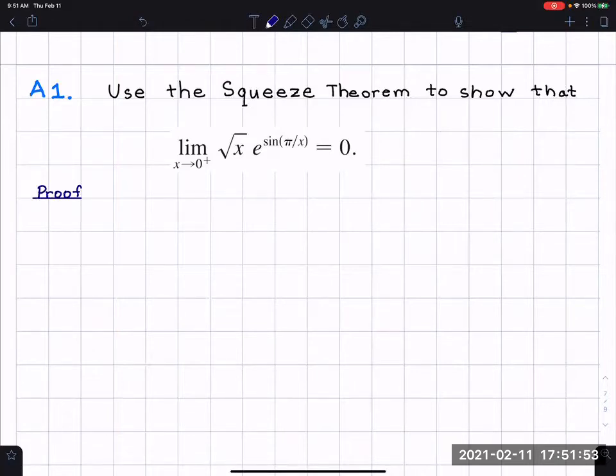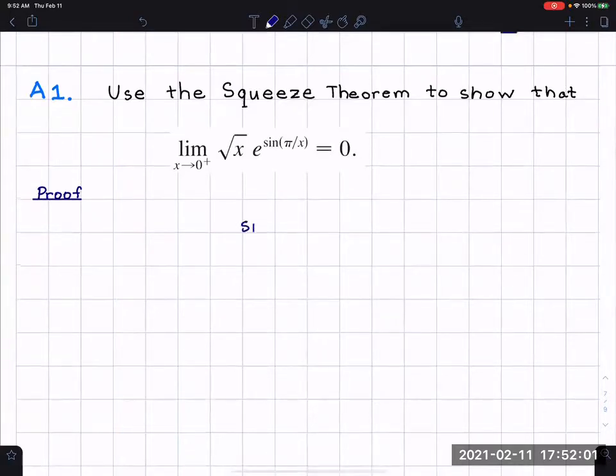One of the things we've seen on previous problems with the squeeze theorem is when you had sine, we saw an inequality used for sine. Sine is at most one and at least negative one. When we use the squeeze theorem, we do need to have an inequality.